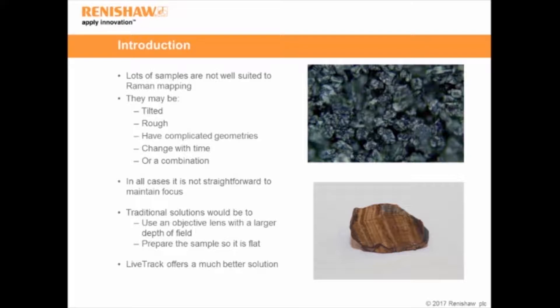Unfortunately, lots of samples are not well suited to Raman mapping — they can be tilted, rough, have complicated geometries, they might change with time, or it might be a combination of these things. As illustrated on the right, I've included an image of a lithium-ion battery electrode made out of carbon, and you can see here, even over this small area of about 20 microns in size, regions where we're in focus and out of focus.